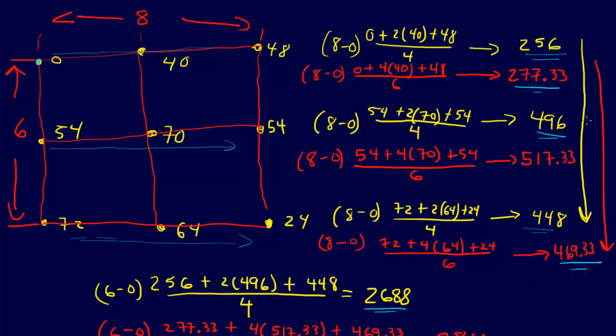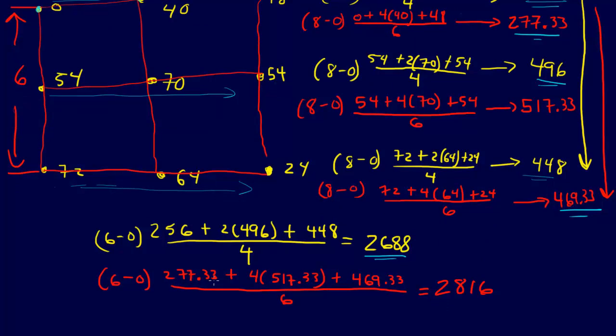Then again, we can come along this other dimension and combine these three values with the same Simpson's one-third rule. When we do that, we get 6 minus 0 times 277.33 plus 4 times 517.33 plus 469.33 divided by 6. That comes out with 2816 for our total temperature.